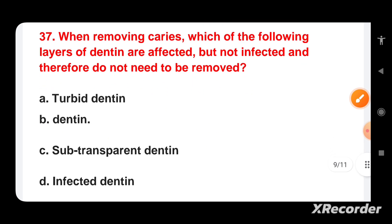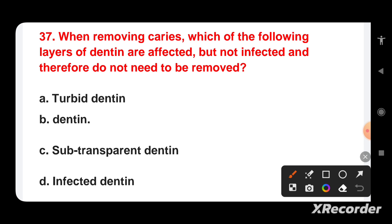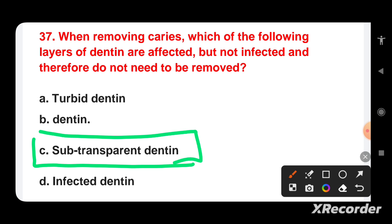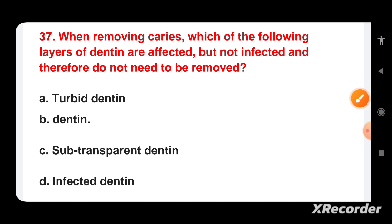When removing caries, which layer of dentine is affected but not infected and therefore does not need to be removed? Options are: turbid dentine, dentine, sub-transparent dentine, or infected dentine. Infected dentine contains bacteria and is demineralized, so it should be removed. Sub-transparent dentine, also called affected dentine, is demineralized and may be discolored but is not infected with bacteria. Only infected dentine should be removed; the affected dentine should be preserved to maintain tooth vitality and reduce risk of pulp exposure.